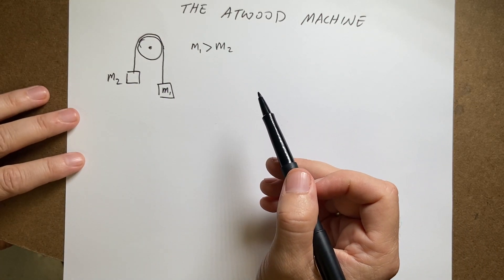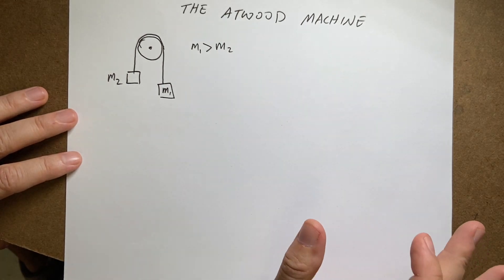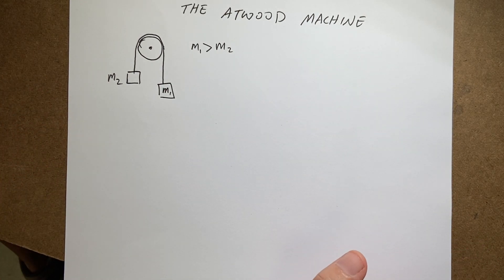Okay, this is the Atwood machine. What I want to do is set up the physics. There's a whole bunch of different versions of these. I'm going to start off simple and make it more complicated. It's going to be awesome. We're going to do Atwood machine all over the place.